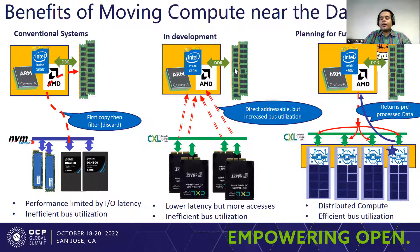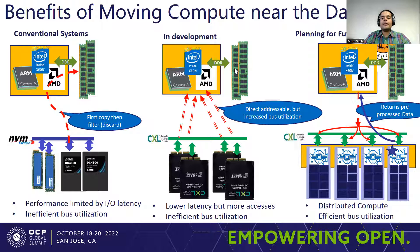This concept of moving compute near the data is not new, but it has many benefits. For example, it provides a deterministic latency to the host and it frees up CPU cycles from the host while the device is still working in the background to complete a task. In today's discussion, we'll dive deeper into some of these benefits and look at some examples in the next few slides.